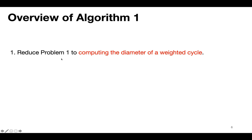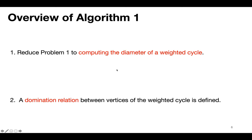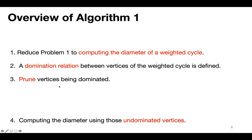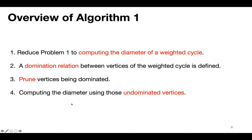Next, let's introduce Algorithm 1. The first step is reducing the problem to computing the diameter of a weighted cycle. Next, a domination relation is defined for the vertices of the weighted cycle. Then we prune the dominated vertices. Finally, computing the diameter is done using those undominated vertices.